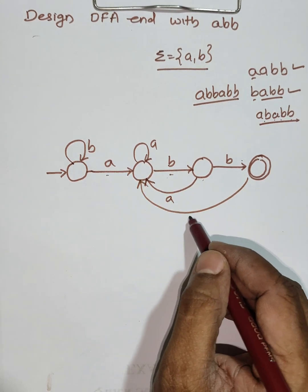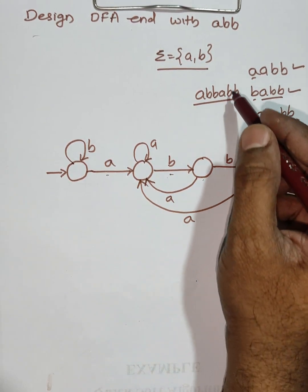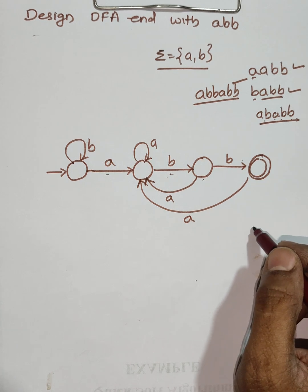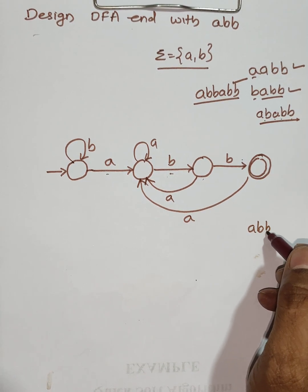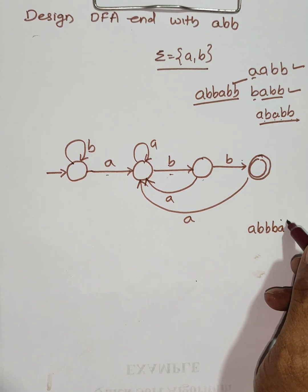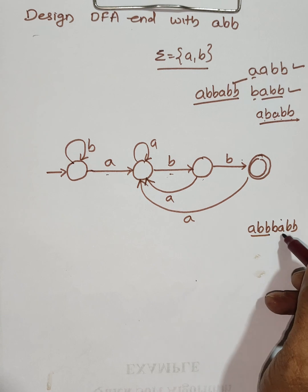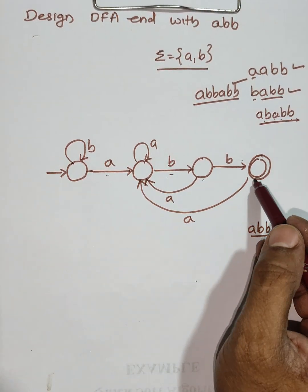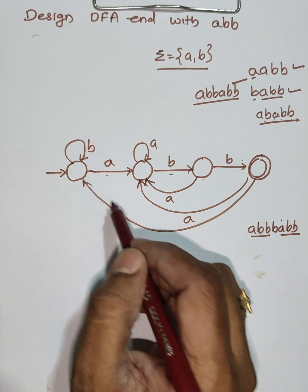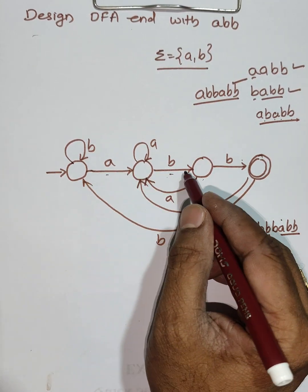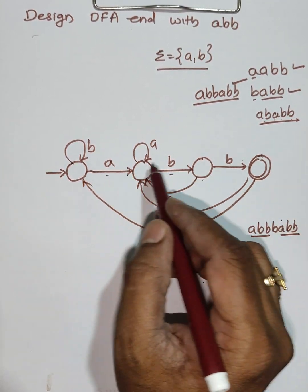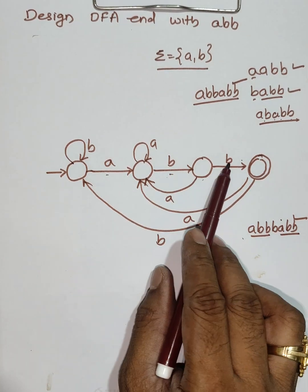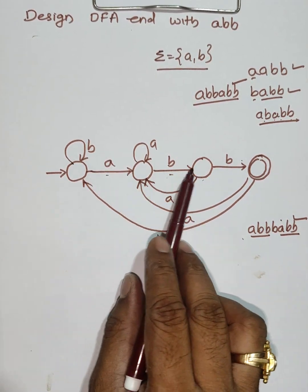So the string A, B, B, B is considered. Between two ABB patterns there can be one B — for example A, B, B then B, A, B, B is accepted. Also A, B, B then B, then again A, B, B is accepted.